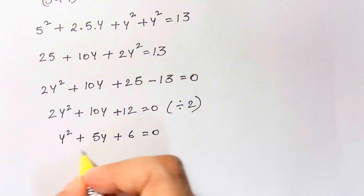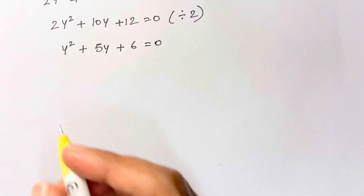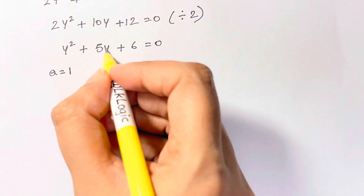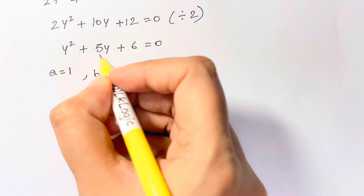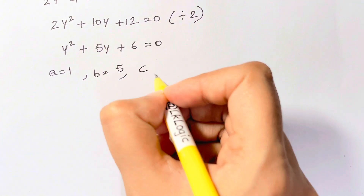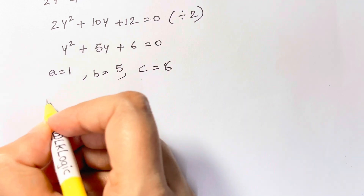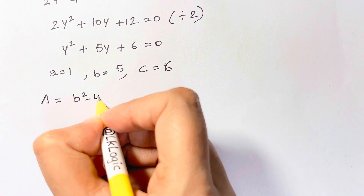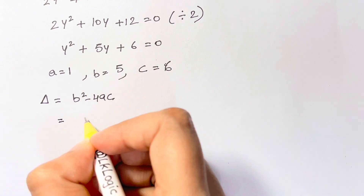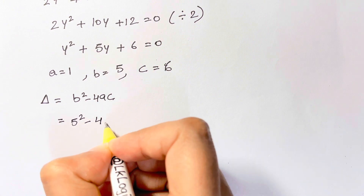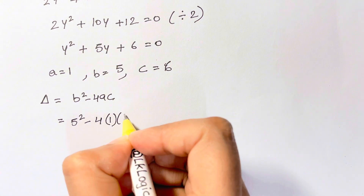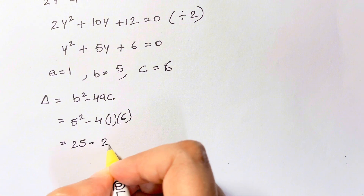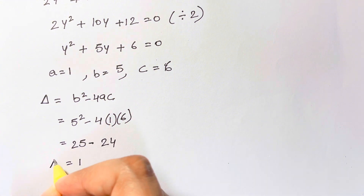Now you have a quadratic equation where we are going to use the quadratic formula. What is a? It's the coefficient of y squared: 1. What's b? The coefficient of y: that's 5. And c is the constant: plus 6. Now let's find our discriminant, delta, which is b squared minus 4ac. So b squared is 5 squared minus 4 times 1 times c, which is 6. So you have 25 minus 24, that's equal to 1. So your discriminant is 1.